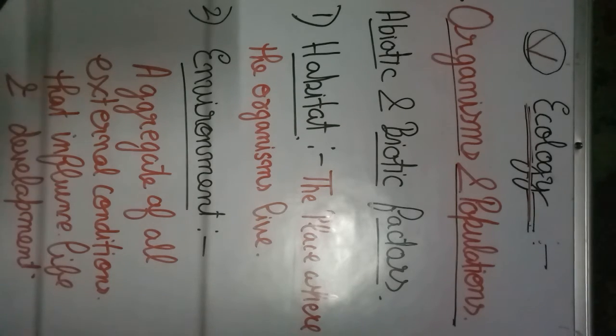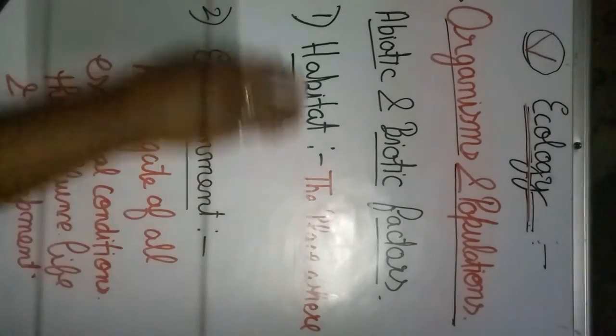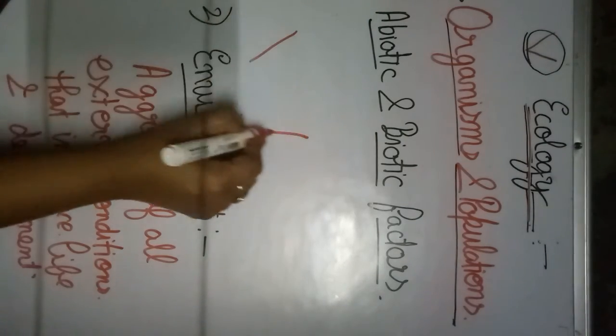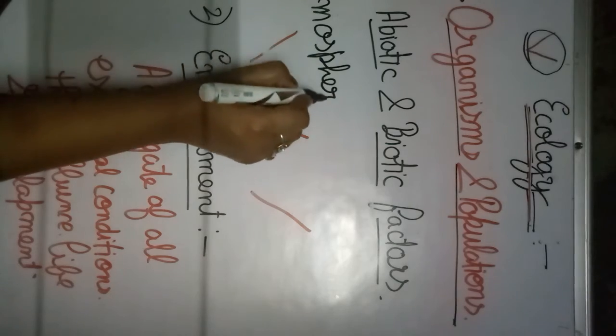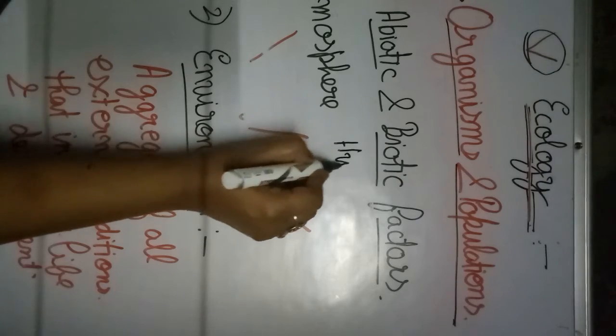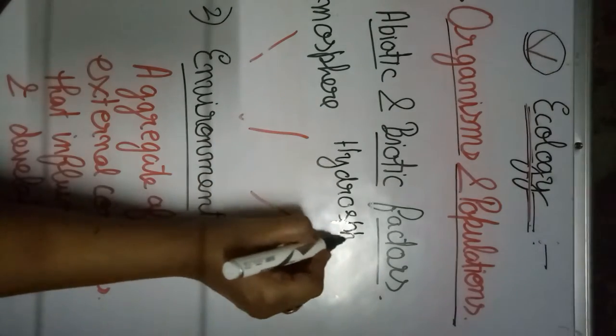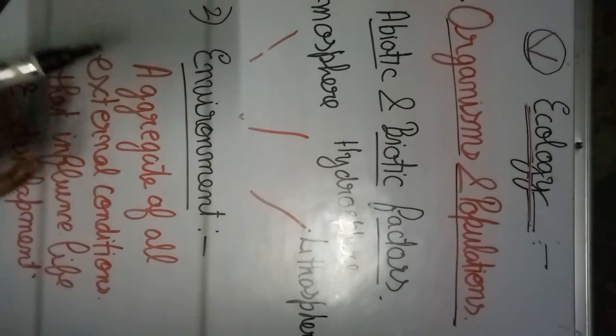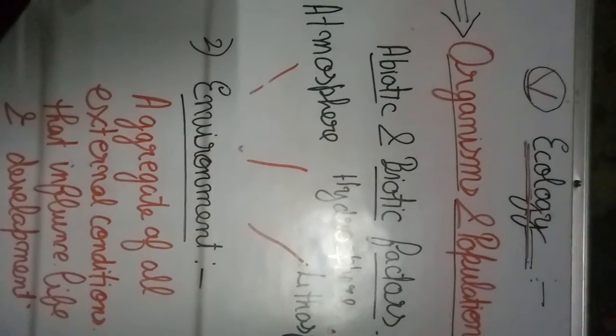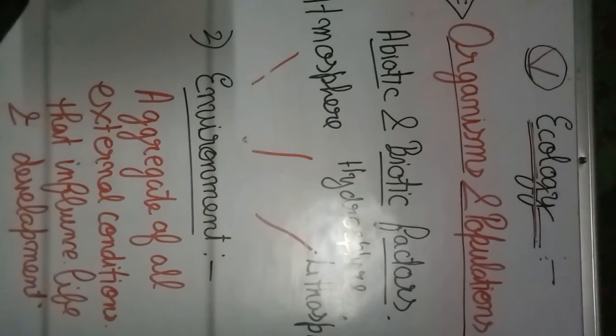In our environment we have three components. The first component is the atmosphere. The second component is the hydrosphere. And the third component is the lithosphere. So atmosphere, hydrosphere, and lithosphere are the three components of our environment.